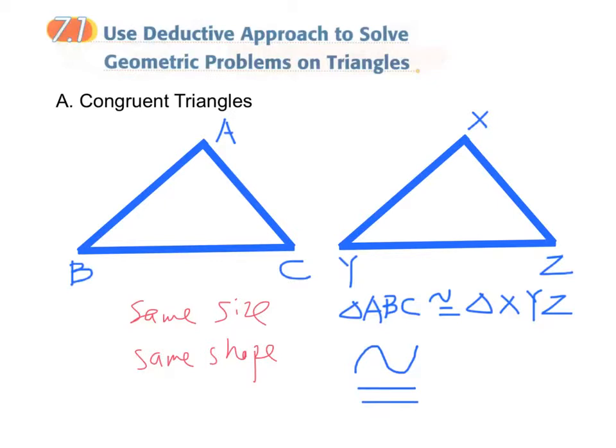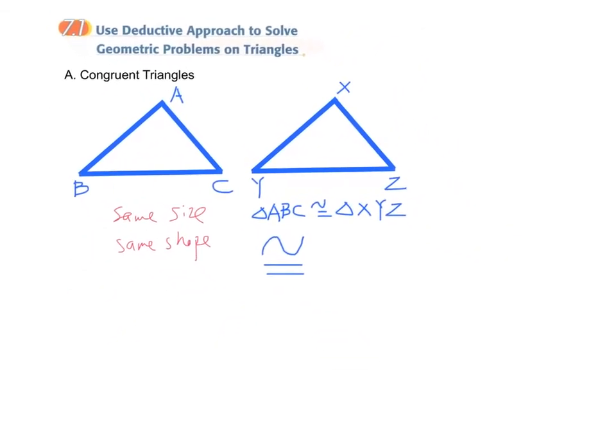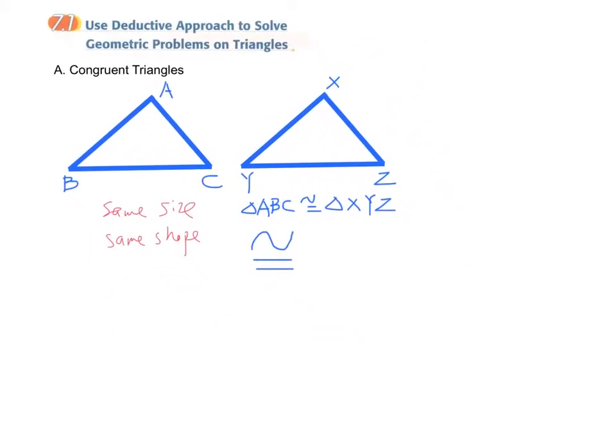For congruent triangles, we have two very important conditions to bear in mind. The first one is all the corresponding sides are equal. And therefore we have this conclusion: AB equals XY, BC equals YZ, and CA equals ZX. And we have a reason for this: corresponding sides, congruent triangles.